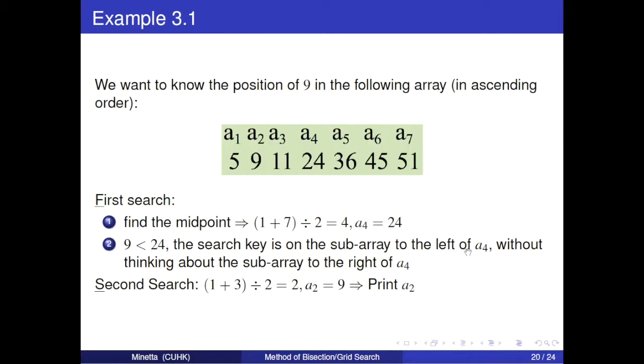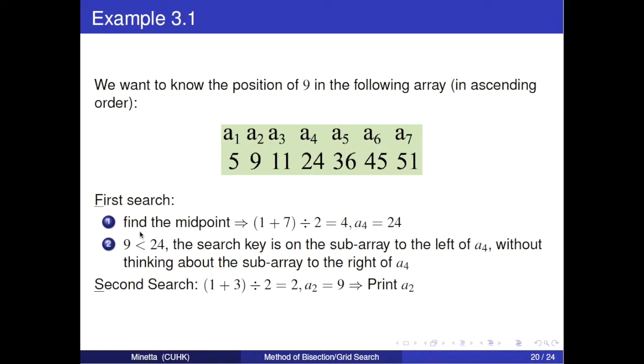Take an example. We want to know the position of 9 in the following array. We know that the array is in ascending order. In first search, we find the midpoint by this calculation. And we get a4 equals 24. Because 9 is less than 24, the search key is on the sub-array to the left of a4. Then continue the second search. Also, by this calculation, we get a2 equals 9. Finally, print a2.